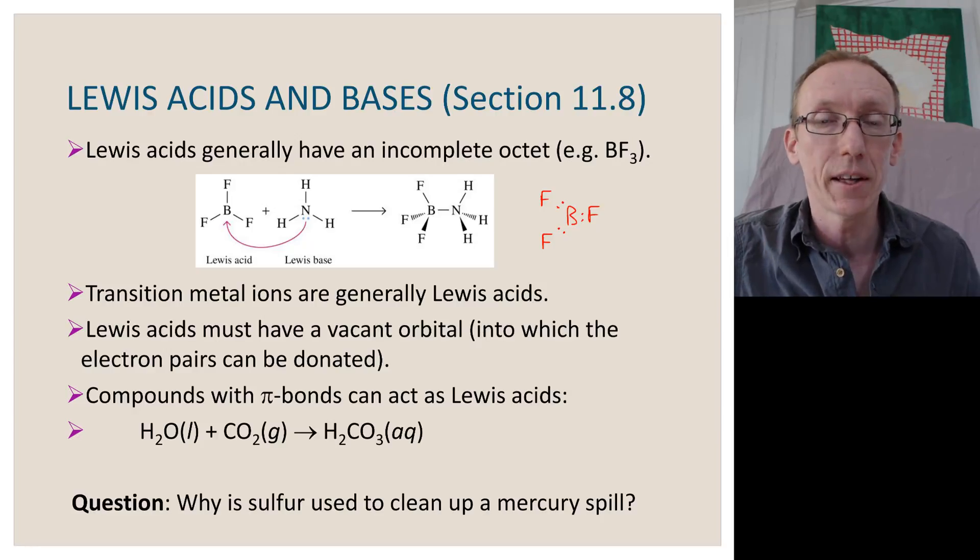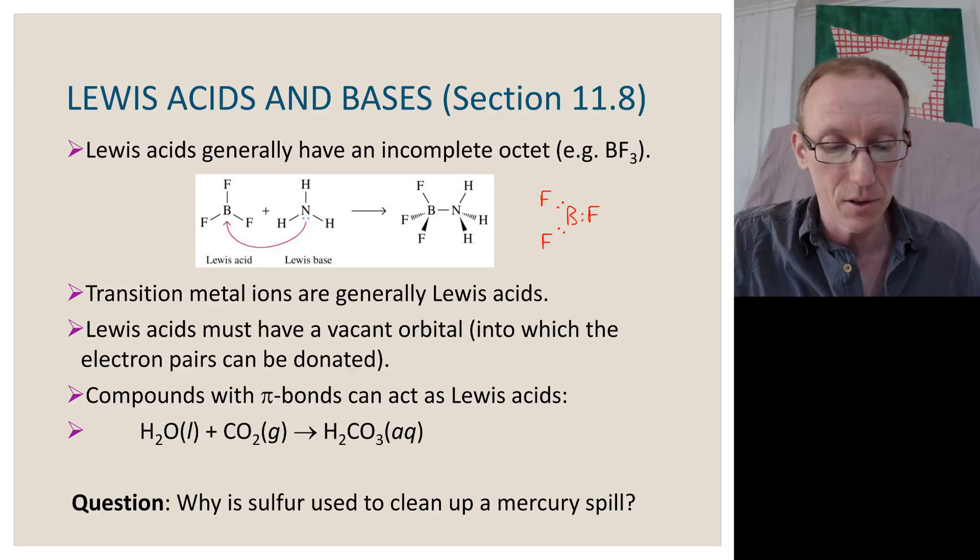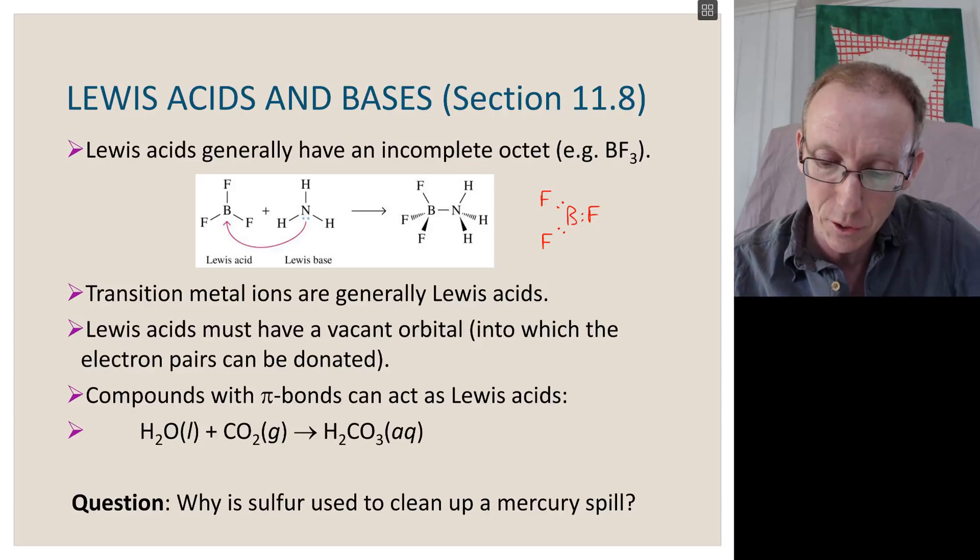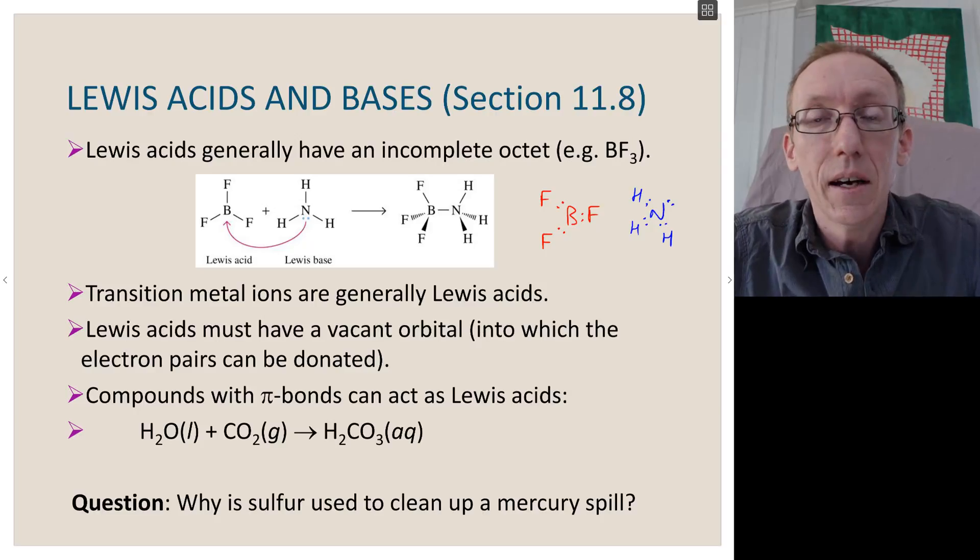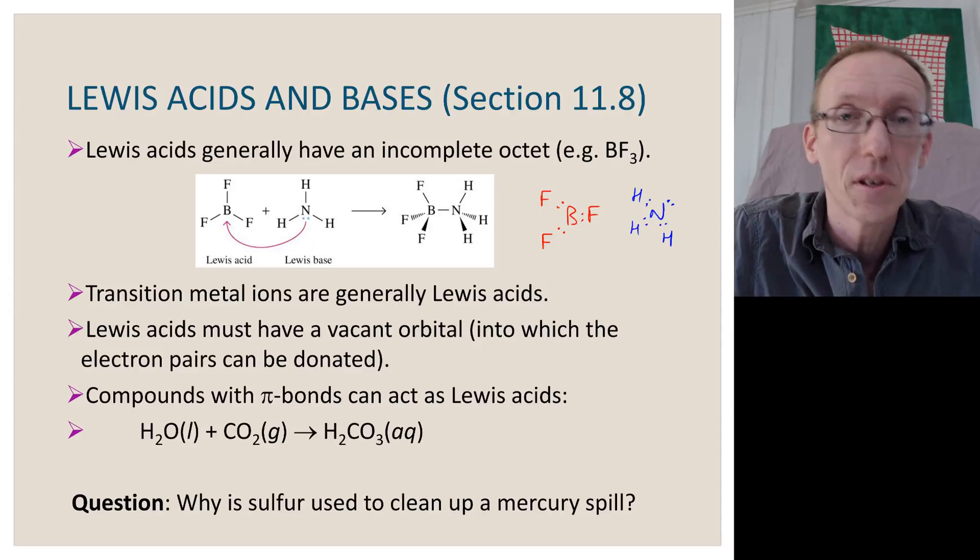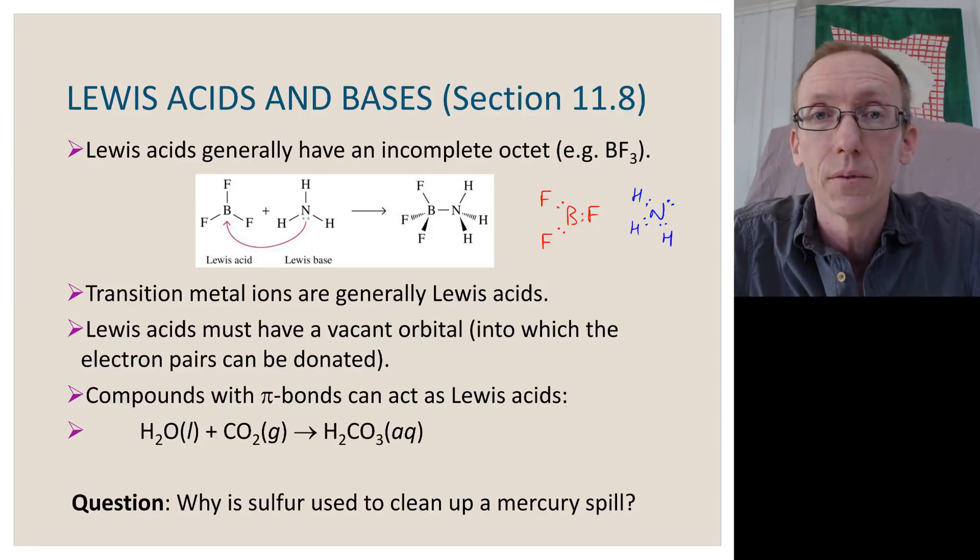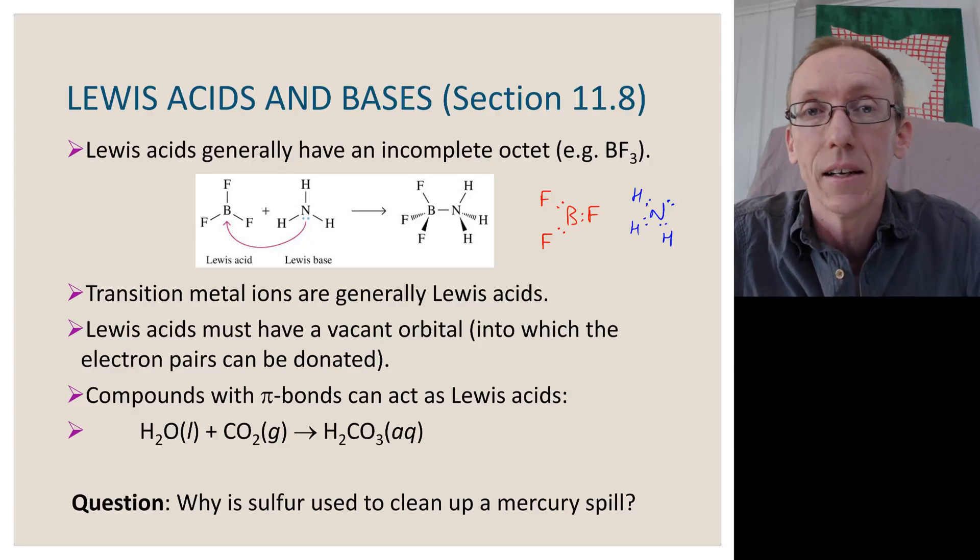And we know that these elements want to satisfy that octet rule. They want to have eight valence electrons. And so it tries to accept electrons from a Lewis base. So ammonia has a different structure. If we look at the structure of ammonia, it has a nitrogen with these six electrons being shared between nitrogen and hydrogen in these covalent bonds. And then it has a lone pair of electrons all to itself. And so overall, its valence shell, the nitrogen, is seeing eight electrons where it has satisfied the octet rule.